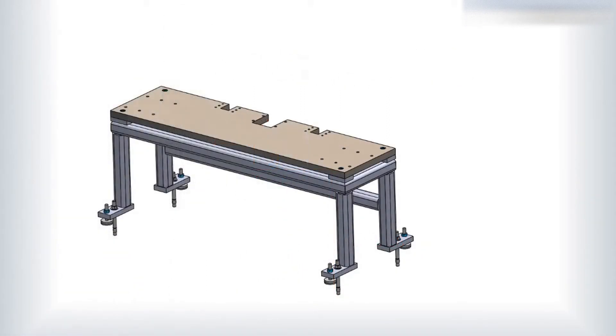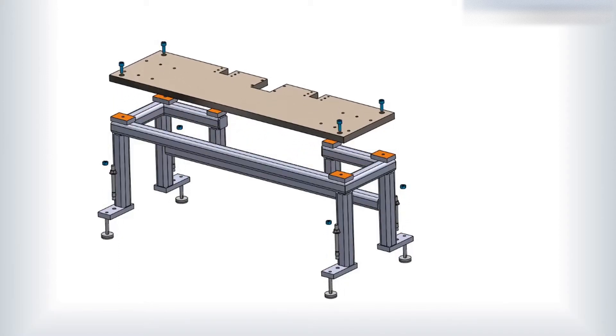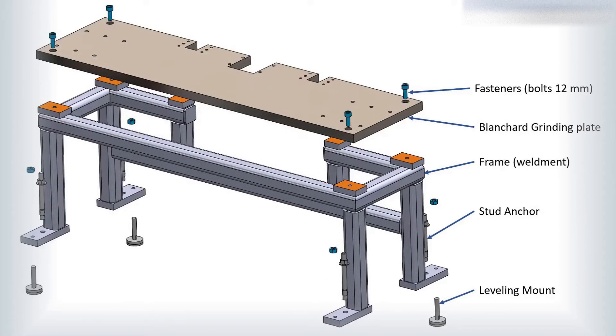Okay, main components of table frame assembly are: fasteners, bolts 12mm, Blanchard grinding plate, the frame weldment, stud anchor, and leveling mount.